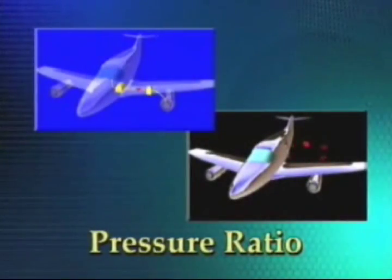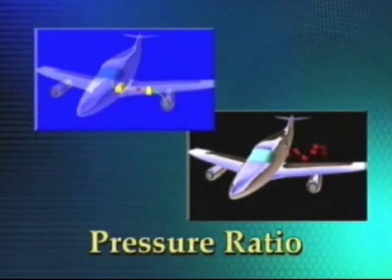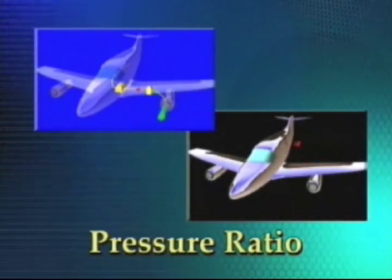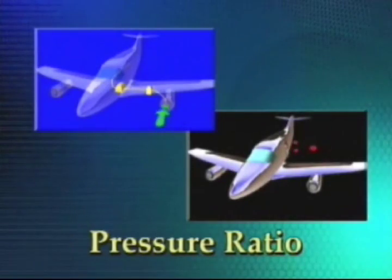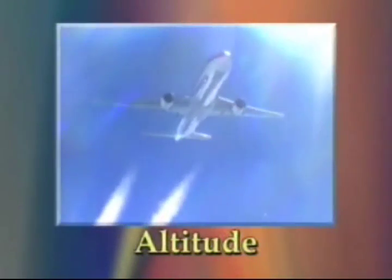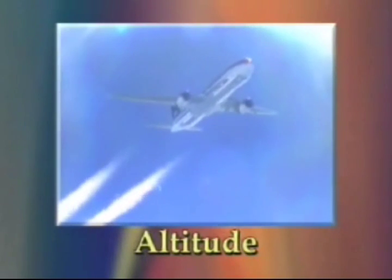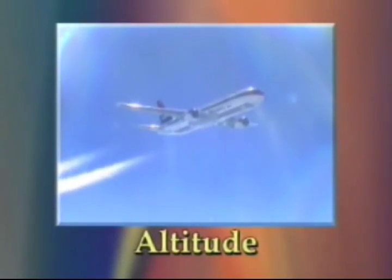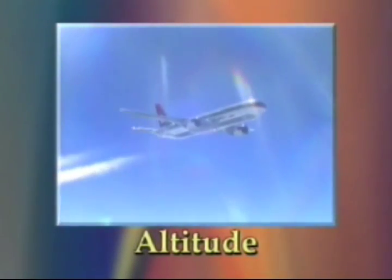Pressure ratio: when cabin pressurization is lost, aircraft compressors will continue to operate. The rate at which the compressed air comes in dictates how fast pressure is lost. Altitude: the greater the altitude when the decompression occurs, the more severe the physiological effects.